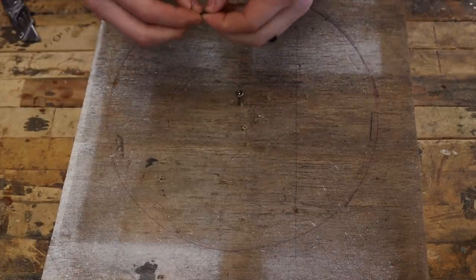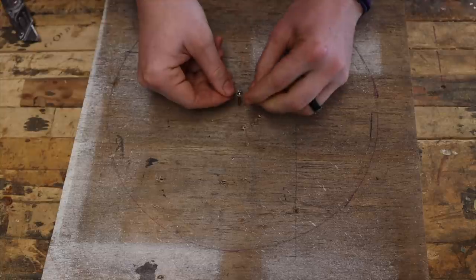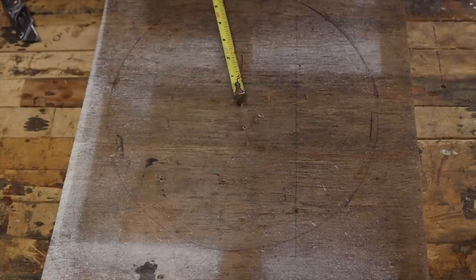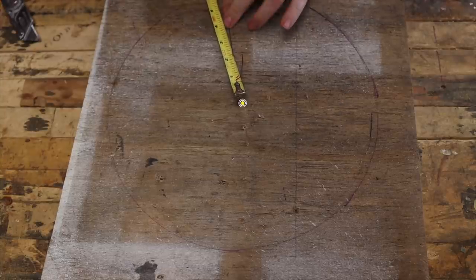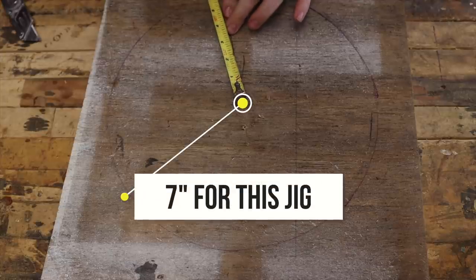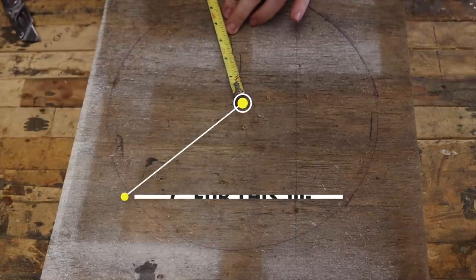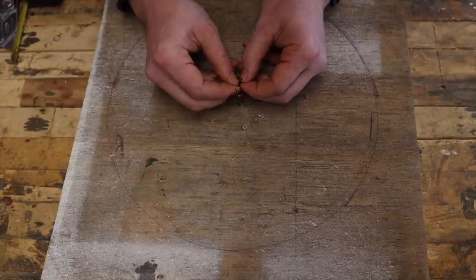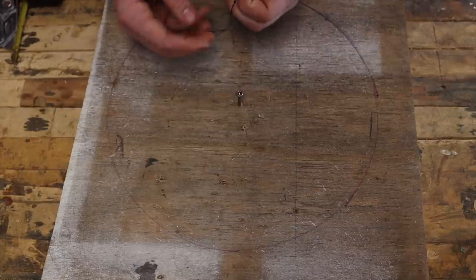Our first thing is we're going to make a circle and cut it out. We want the jig to be at least six inches, maybe a little bit bigger. We're going to go for seven inches total, so three and a half from center.